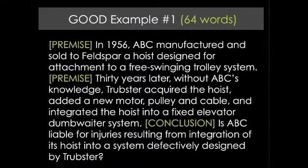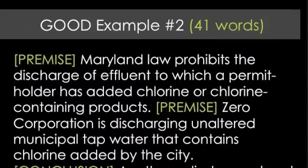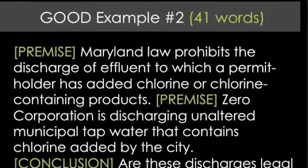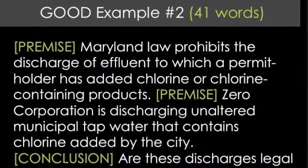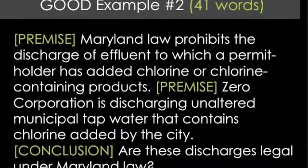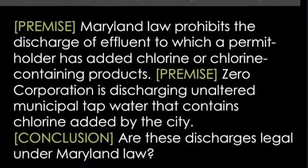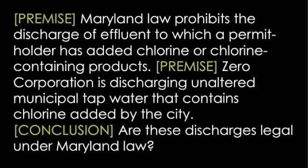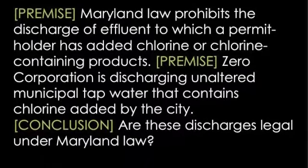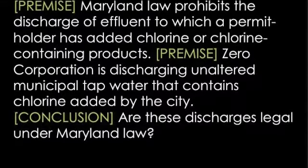This example shows that the major premise is not exactly law, but is a major fact setting up the background. The minor premise provides additional facts, and the conclusion asks the question that the appellate court needs to answer. Good example number two: 'Maryland law prohibits the discharge of effluent to which a permit holder has added chlorine or chlorine-containing products. Zero Corporation is discharging unaltered municipal tap water that contains chlorine added by the city. Are these discharges legal under Maryland law?'